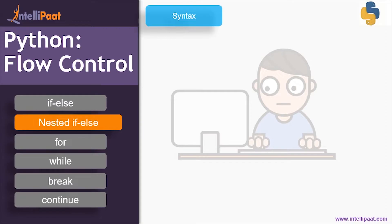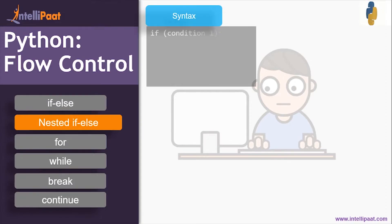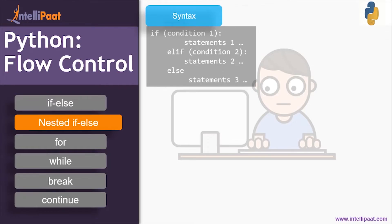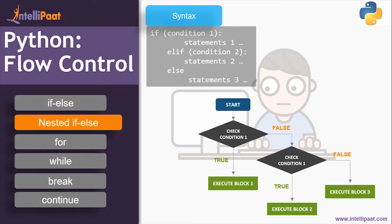Next is nested if-else. Let's see the syntax: if condition one is true, then execute statement one; else if condition two is true, then execute statement two. If none of them is true, then execute statement three. Let's check the flow control — start by checking condition one.